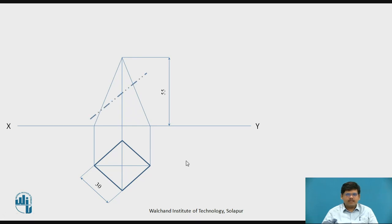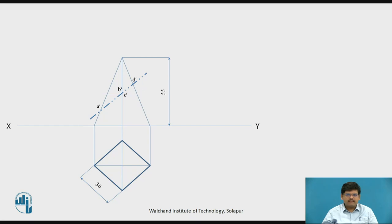This is the cutting plane. The cutting plane is perpendicular to VP, hence it is seen as a line in the front view. It is inclined at 45 degrees to HP — anything with respect to HP is seen in the front view. It bisects the axis, passing through the midpoint of the axis. Wherever the cutting plane cuts the edges, we mark those points, starting with point a.